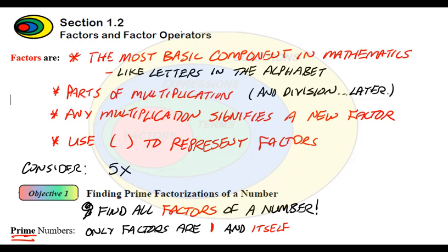So any part of multiplication signifies a new factor. So I have to be able to recognize multiplications. And then we're going to use parentheses to represent factors. So what I mean by that is if I look at this term, notice this is just 5 and then if it's 5x, I know it's multiplication. So this is actually one term.